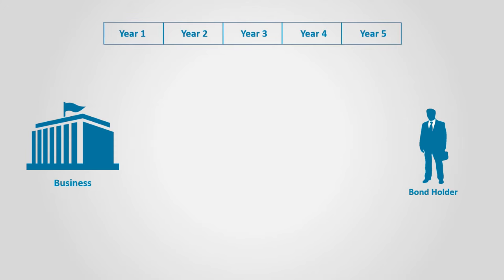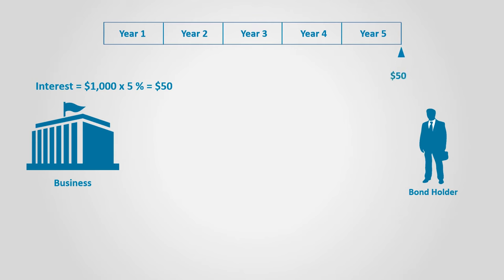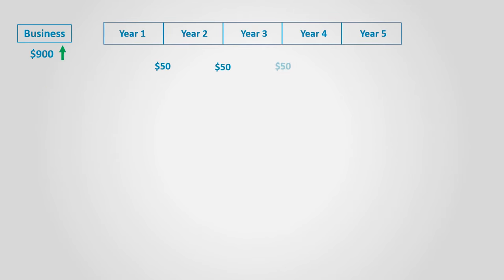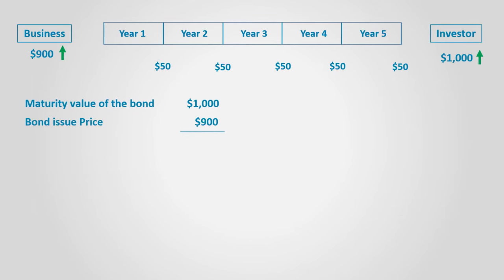In this case, the business collects $900 now to pay the bond's face value at maturity after five years, which is $1,000. So even though the business is paying 5% only, it rewarded the investor at the end by paying an extra $100. The business pays an annual interest of $1,000 × 5% = $50 for each of the five years. The company receives $900 and issues a bond with a face value of $1,000 — we call it issued at a discount, usually mentioned as issued at 90, meaning 90% of the bond's value.